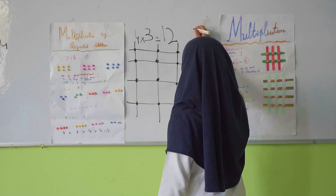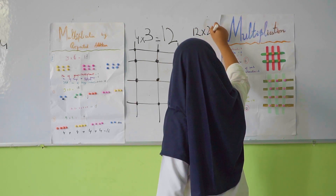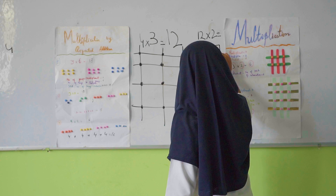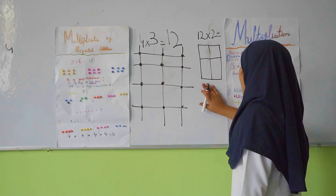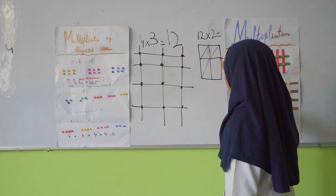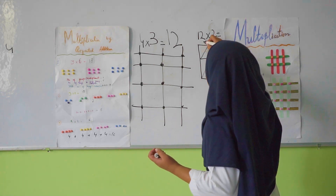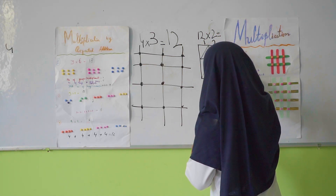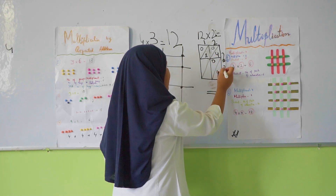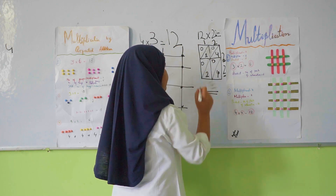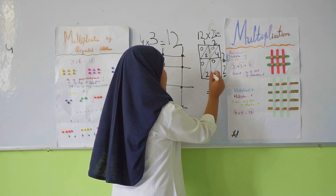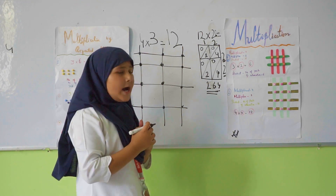If there is a question 12 multiply by 2, I draw a lattice grid. Here we will write 12 along the top and 2 on the side. Now we will multiply: 2 multiplied by 2 is 4, and 2 multiplied by 1 is 2. Now we will add along the diagonals: here is 4, then 4 plus 2 is 6, and here is 2. Then we write it and our answer is 264.